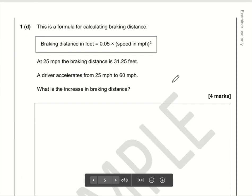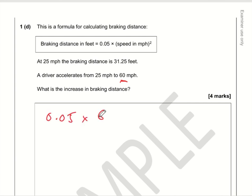Okay, question D. Here is the formula for calculating the braking distance. So we've been told what it is for 25, so we need to work out what it is for 60. So it's going to be 0.05 multiplied by 60 squared. So we'll do the 60 squared first. 60 times by 60 is—well, 6 times 6 is 36—so let's just put those two zeros in.